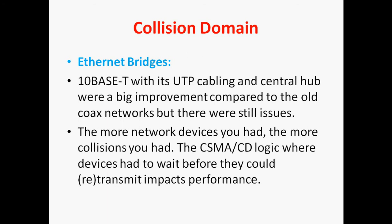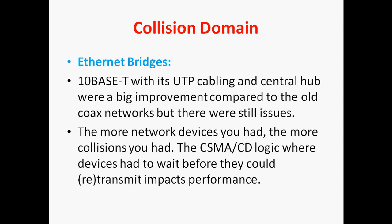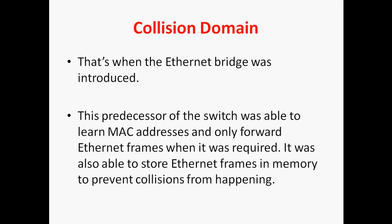If a network device could somehow transmit and receive at the same time — like full duplex — that would help. That's why when the Ethernet bridge was introduced, this kind of switch was able to learn the MAC address and only forward the Ethernet frames when required. It was also able to store the Ethernet frames in memory to prevent collisions from happening.